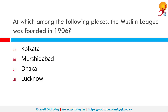At which among the following places was the Muslim League founded in 1906? In December of 1906, the All India Muslim League was set up under the leadership of Aga Khan, Nawab Salimullah Khan of Dhaka and Nawab Mohsinul Mulk at Dhaka. The correct answer is Dhaka. The League supported the partition of Bengal, opposed the Swadeshi movement, and demanded special safeguards and a separate electorate for Muslims.